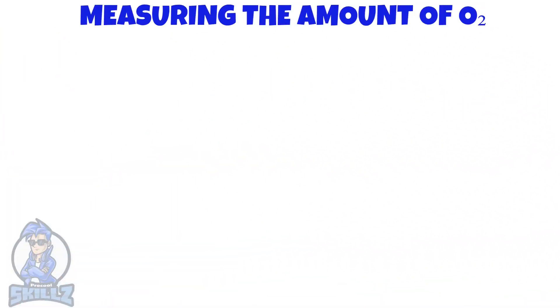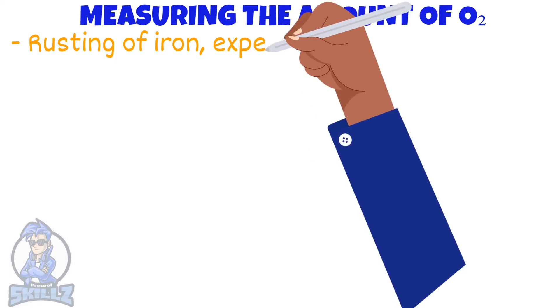Next, let's see how we can measure the amount or percentage of oxygen in the air. First, let's look at a practical experiment on how we could measure the percentage of oxygen in the air by the rusting of iron.